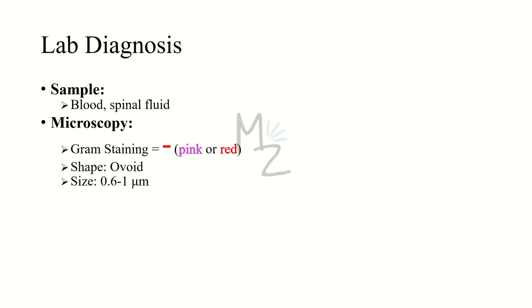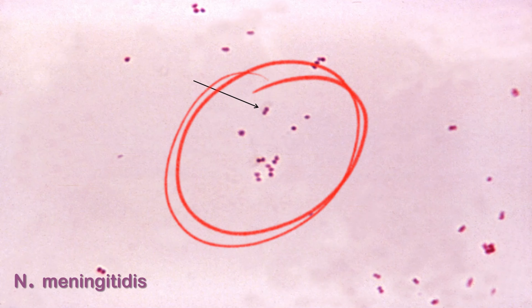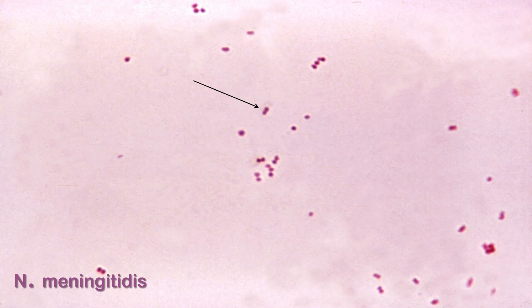For lab diagnosis, samples of blood and cerebrospinal fluid (CSF) are needed. On microscopy, this bacterium is revealed to be gram-negative due to its pink or red color after staining. It is ovoid or kidney-shaped, 0.6 to 1 micrometer in size, and appears as a diplococcus.